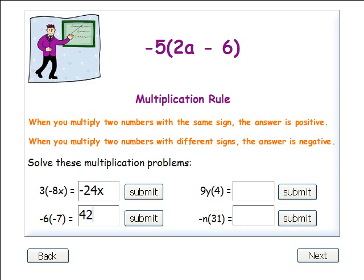9y times 4. Once again, the two numbers have the same sign, so our answer will be positive. Negative n times 31. Negative n is actually negative 1 times n, so our two numbers have different signs. Our answer will be negative.